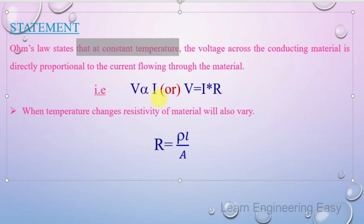So voltage V is directly proportional to current I. To remove the proportionality sign, we add a constant. V is proportional to I, and when we add the proportionality constant R, we get V = I × R. Here R is the resistance.